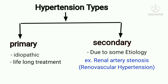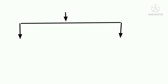Primary hypertension is most of the time idiopathic and requires lifelong treatment with antihypertensive medication. But secondary hypertension has some etiology behind it, and if we cure that etiology, there is no requirement of medication lifelong. The most common cause of secondary hypertension is renal vascular hypertension or renal artery stenosis.